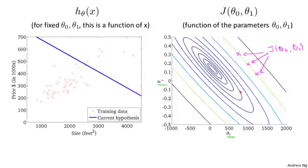If you haven't seen contour plots much before, imagine a bow-shaped function coming out of your screen, so that the minimum — the bottom of the bow — is at the center of these concentric ellipses. Each ellipse has the same height above the screen, and the minimum of the bow is right at the center. So the contour figure is a more convenient way to visualize the function j.